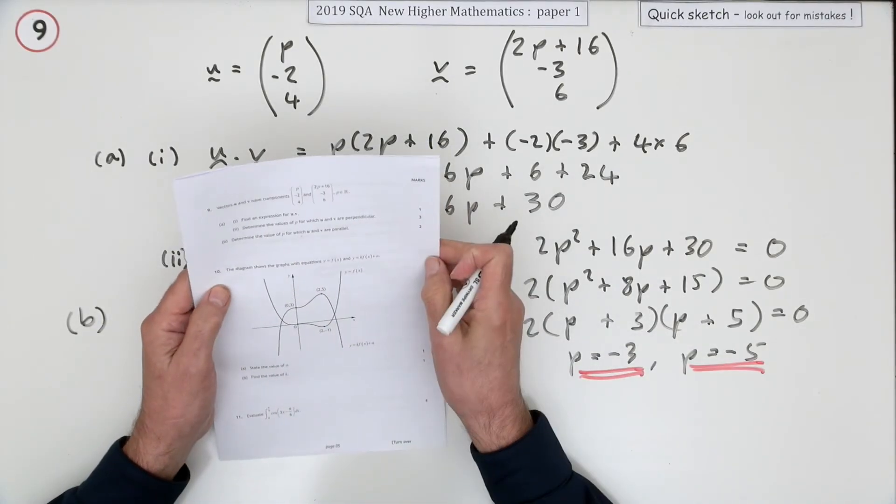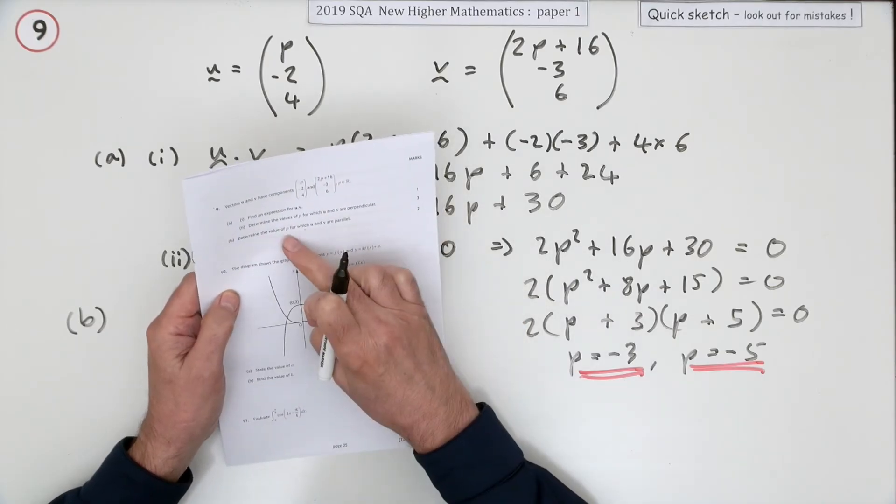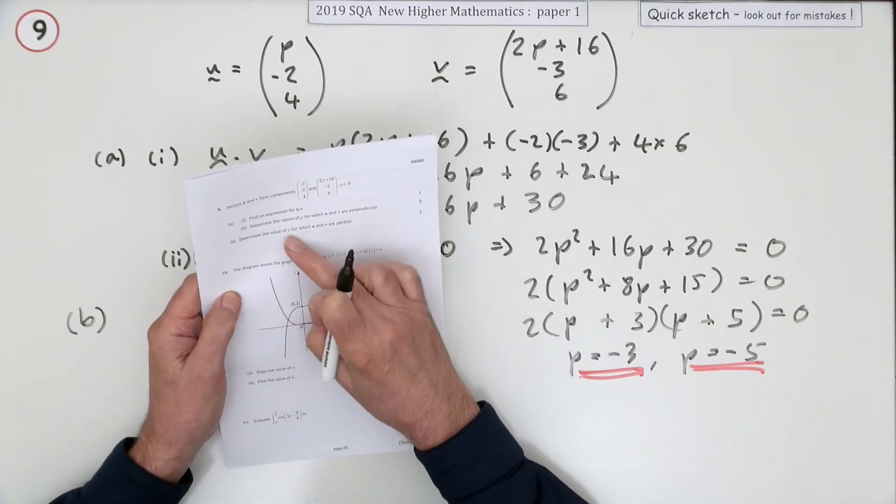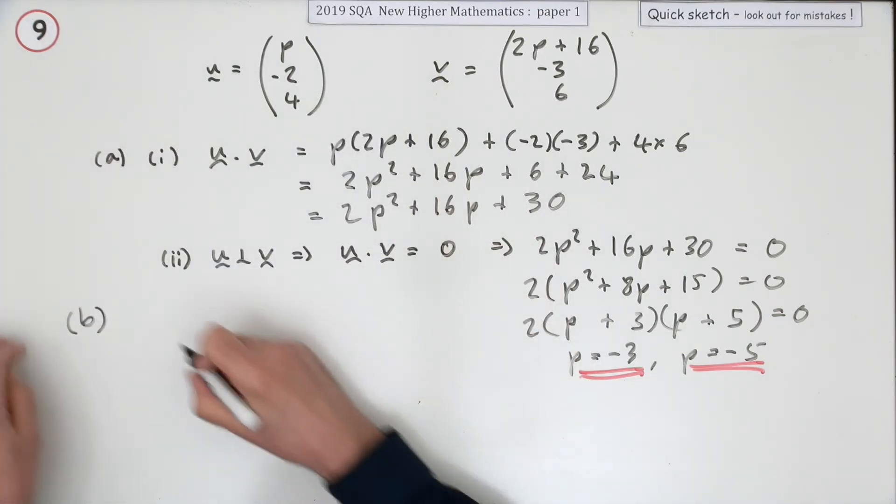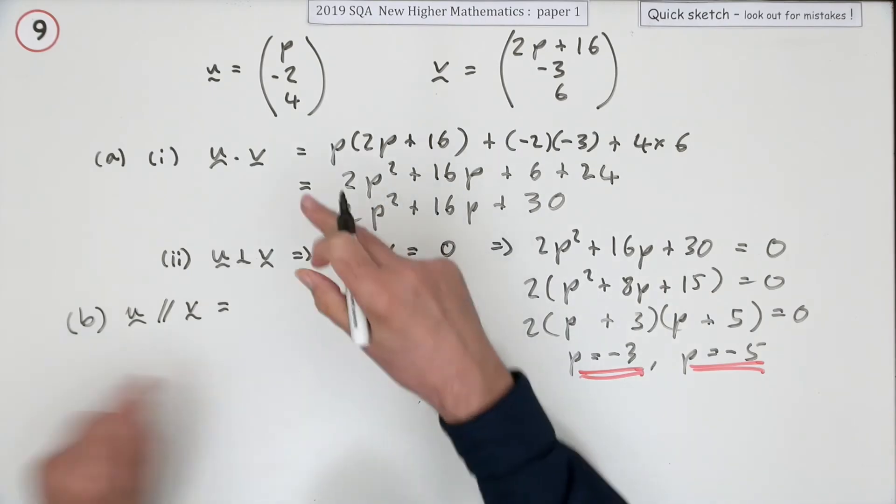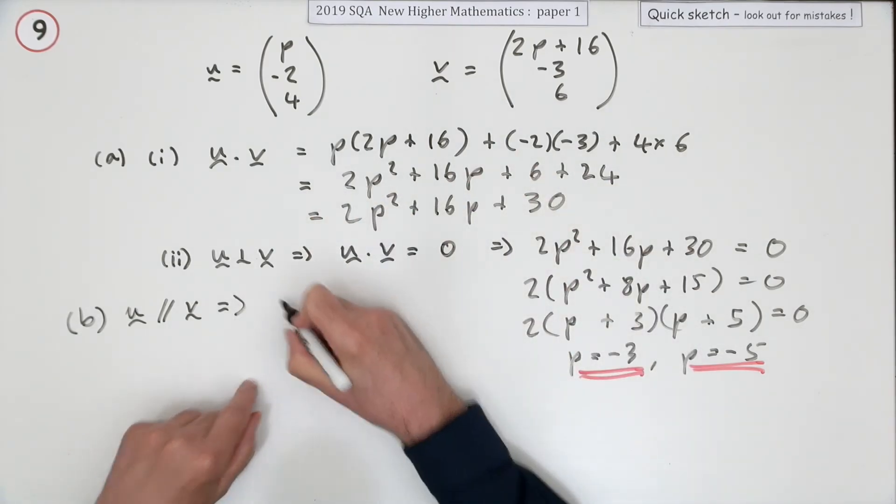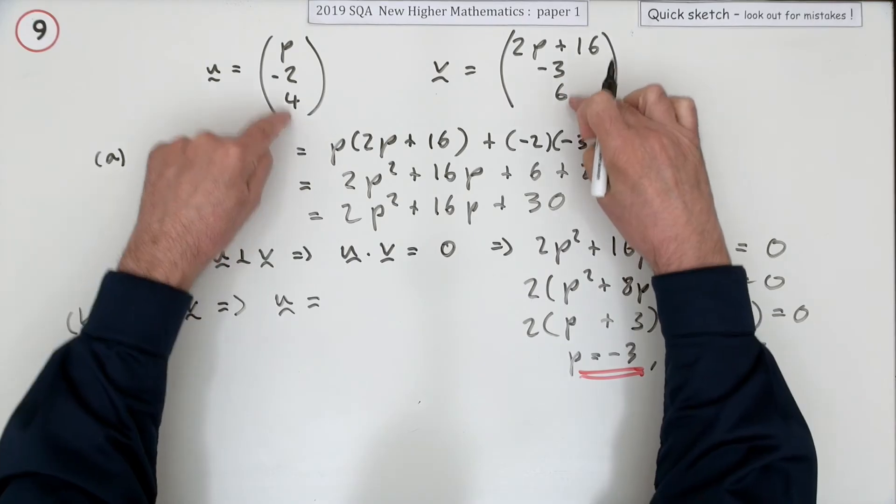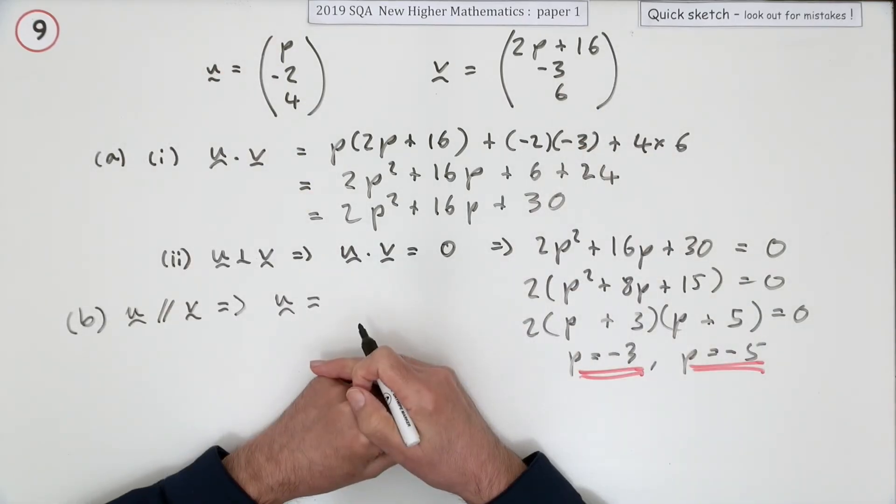Now part b, for two marks: determine the value of p, single value this time, for which u and v are parallel. Well, u parallel to v means one is a multiple of the other. Means u has to be - and since we've already got some fixed numbers, you know what that multiple has to be.